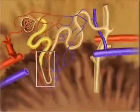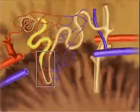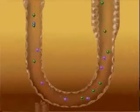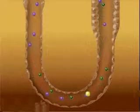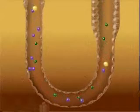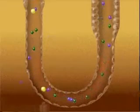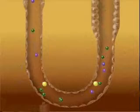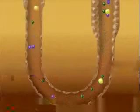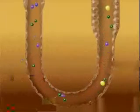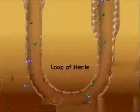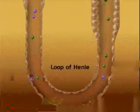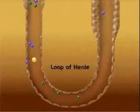Urine passes into the proximal convoluted tubule, then into the nephron loop. The nephron concentrates urine by the process of the countercurrent multiplication system, which is basically the means by which water and sodium are extracted from the filtrate as it passes through the tubules toward the collecting ducts. This system is called countercurrent because of the dynamics set up by the hairpin turn of the loop of Henle.